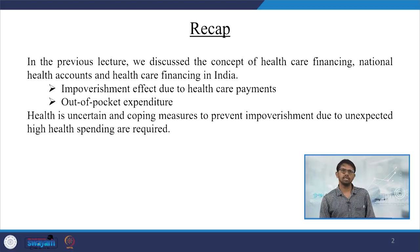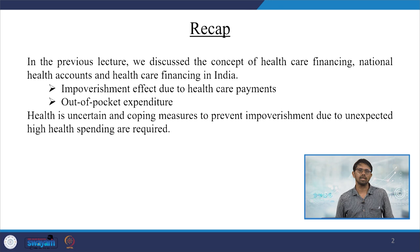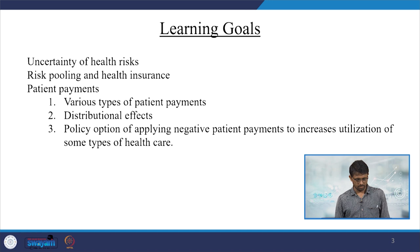As a recap of our previous lecture, we discussed health care financing, national health accounts in particular, and identified the impoverishment effect of health care payments and out-of-pocket expenditure. Health is uncertain and coping measures to prevent impoverishment due to unexpected high health spending are indeed required. The learning goals of this lecture are: uncertainty of health risk, risk pooling and health insurance, and patient payments.